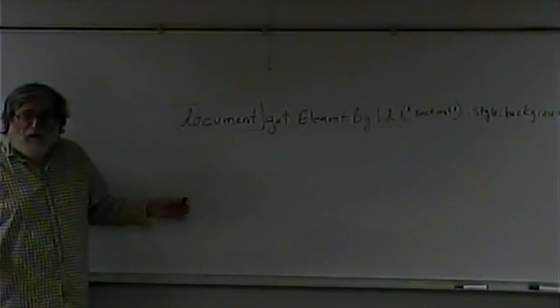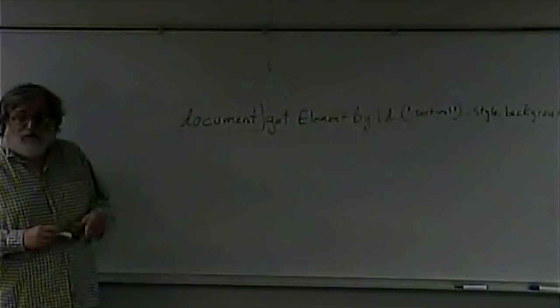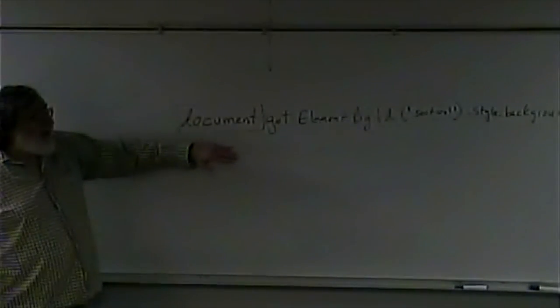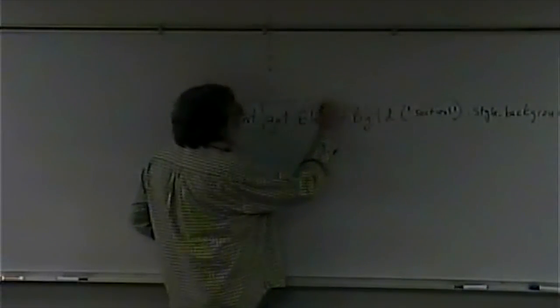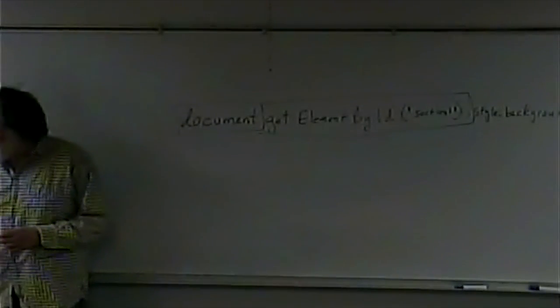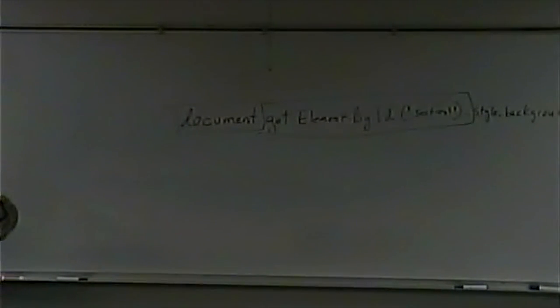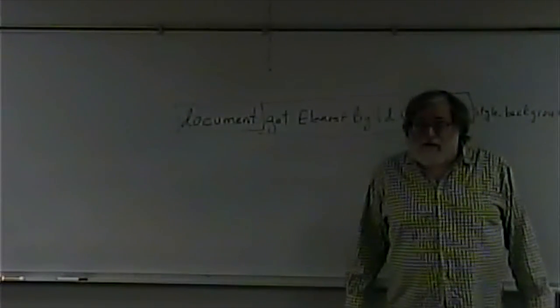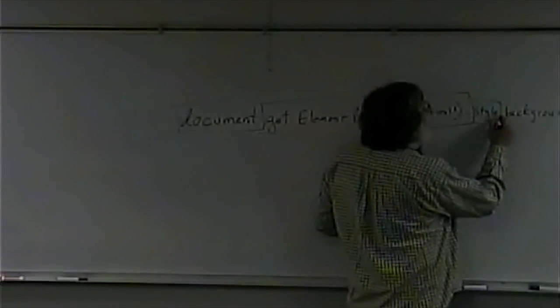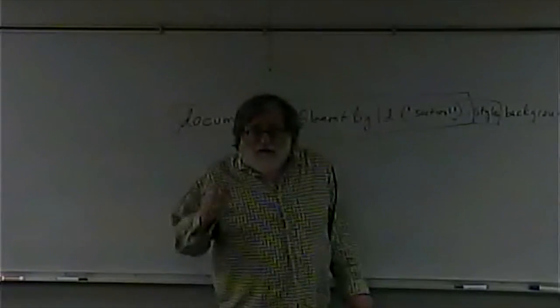getElementById points to one specific element because an ID ought to be unique — there should be only one thing on the page with a given ID, just like your student ID identifies you specifically. Then we specify any attributes we want to change after. If it's an aspect of the style, we say .style. then specify the attribute specific to the style.